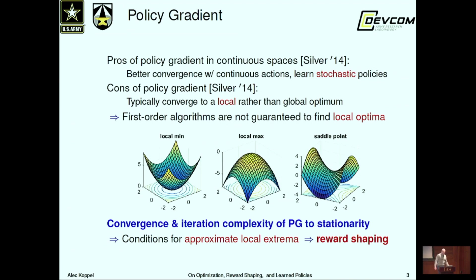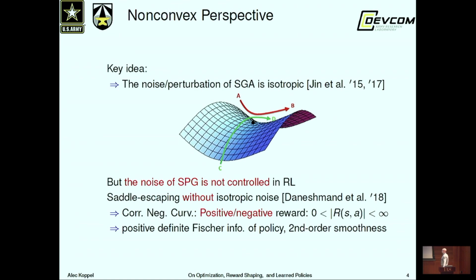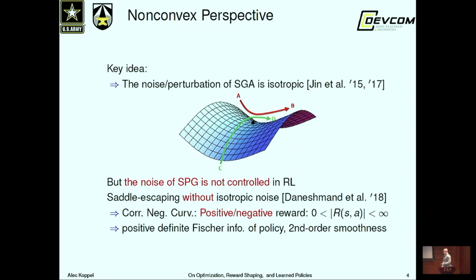In particular, we derive the condition that if the reward function's absolute value is lower bounded away from zero — we typically assume it's upper bounded, so that's no big deal — then the Hessian of the value function satisfies something called the negative correlated curvature condition. Once you have that, you can devise augmented step size rules that allow convergence to approximate local extrema. This is very interesting because it says we should be doing some kind of reward offset, and this comes intrinsically from the structure of the Hessian of the value function.